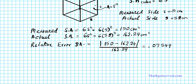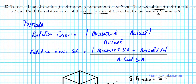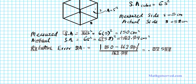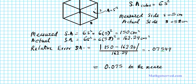We are asked to round to the nearest thousandth. Looking at 0.07544 — the tenth, hundredth, and thousandth places — the digit after the thousandth place is not five or greater, so we truncate. Our answer is 0.075 to the nearest thousandth. The unit is centimeters squared because we're looking for the relative error of the surface area.